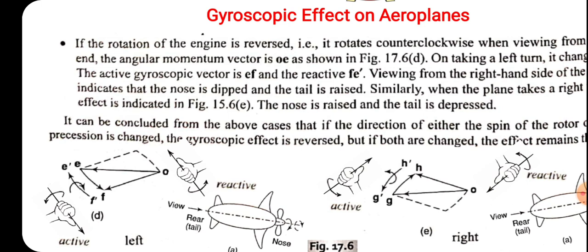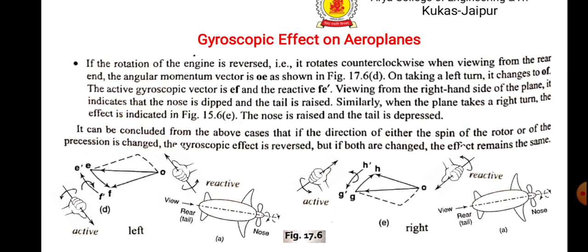If we see from the reactive couple, the rear side will be up and nose will be downward. In the same sense, when it takes the right hand side turn, then the nose will be up and tail will be deep.